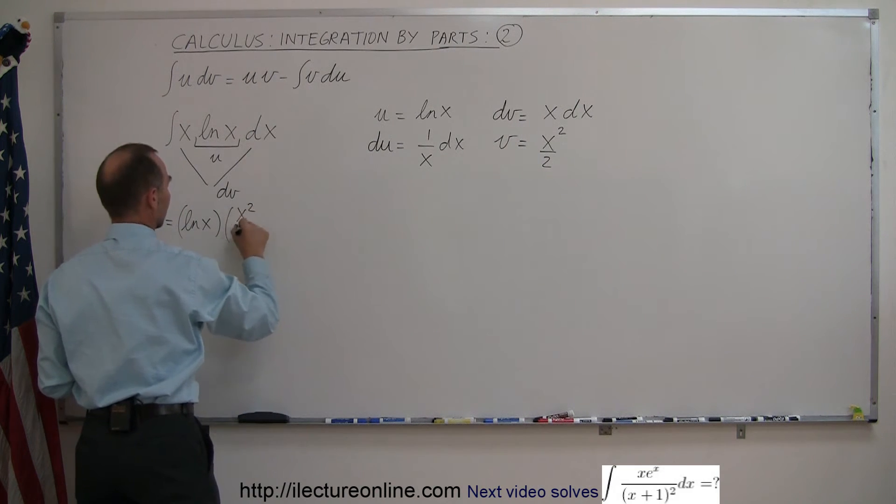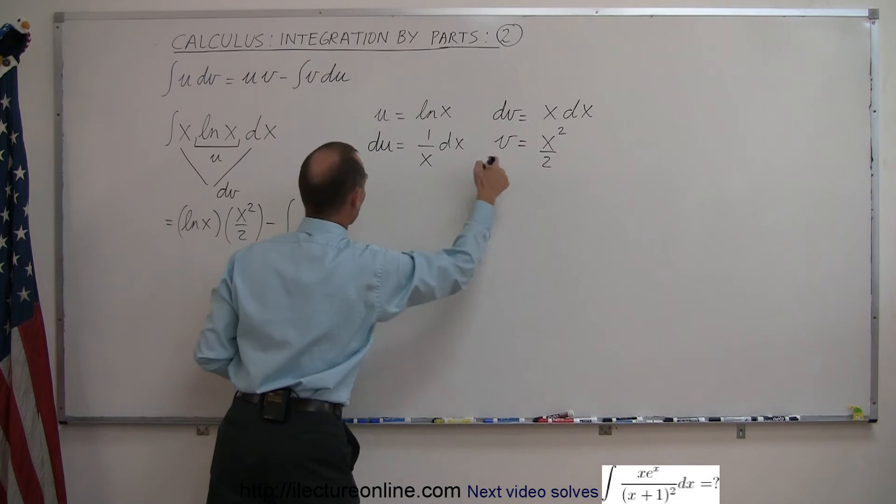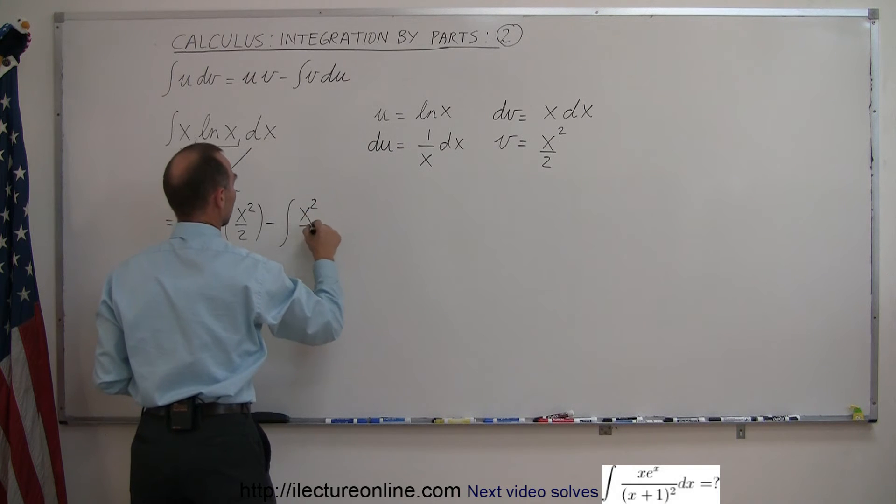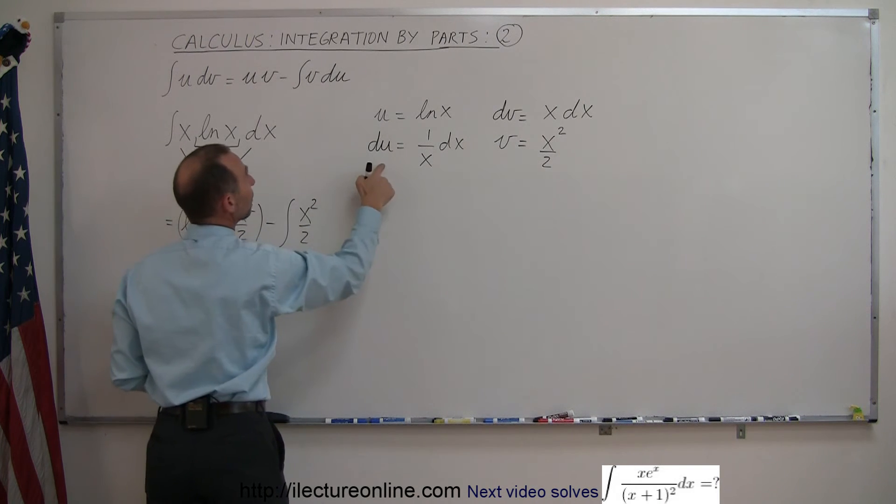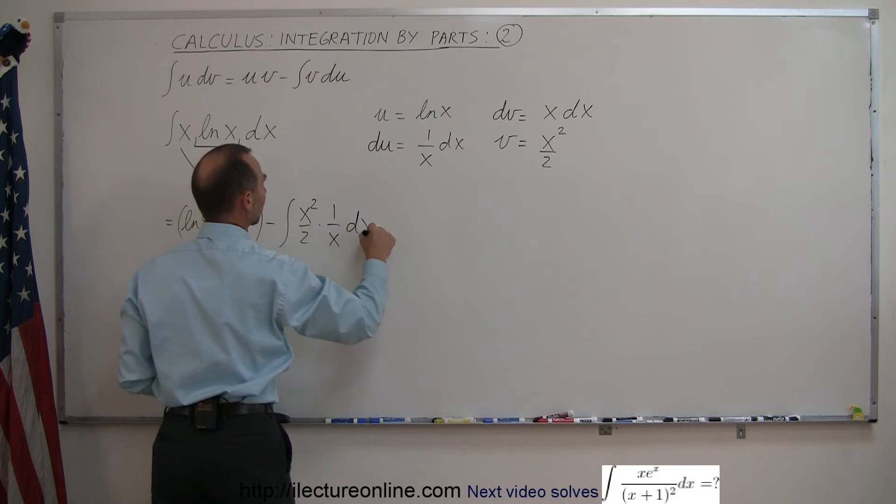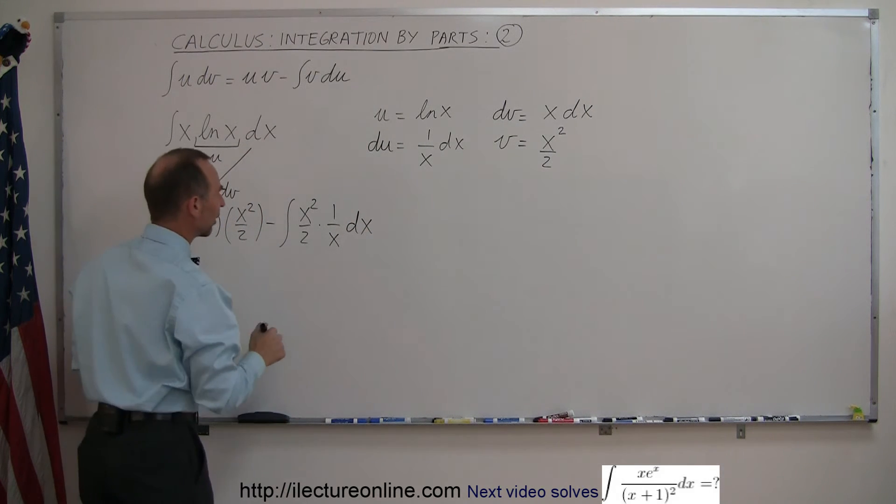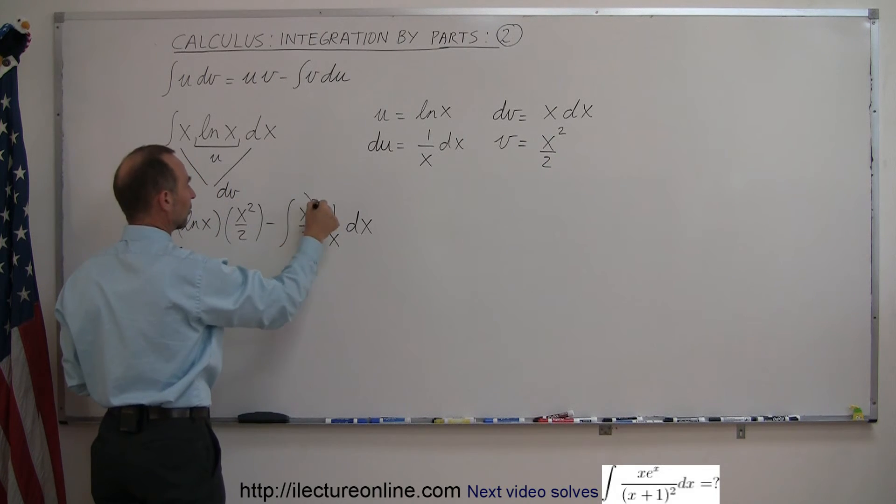minus the integral of v, which is x squared over 2, times du, which is 1 over x dx. And now we can see this is coming together quite nicely because this x will cancel out one of those x's.